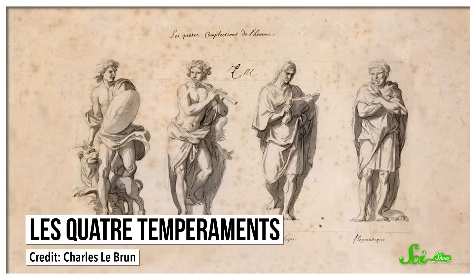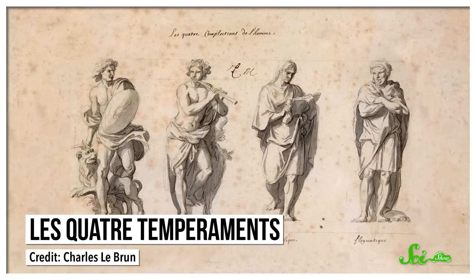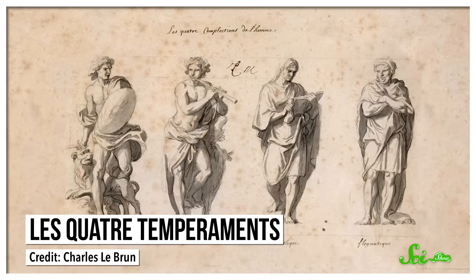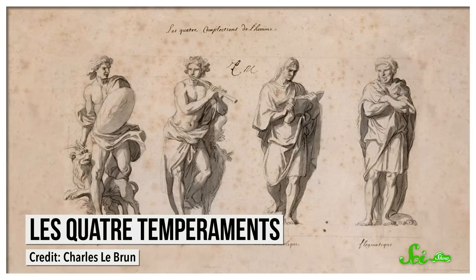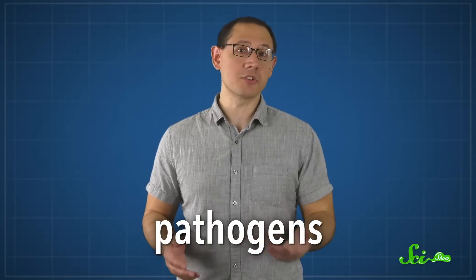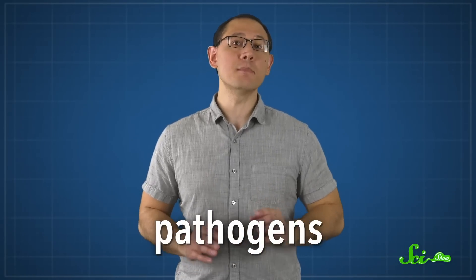Around 400 BCE, doctors might have blamed an imbalance of the four vital humors for your illness. And around the 1700s, they might have pointed to an invisible, disease-carrying fog instead. But today, we know pathogens — viruses, bacteria, and certain other microbes — are responsible for many diseases. But linking specific diseases to the microbes that cause them has been surprisingly tricky.